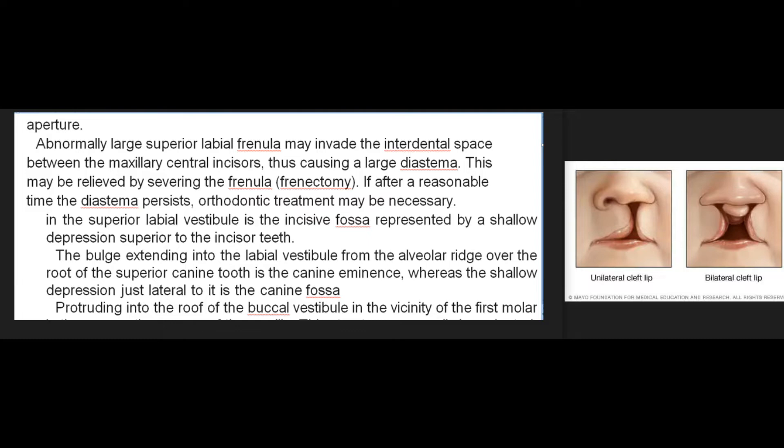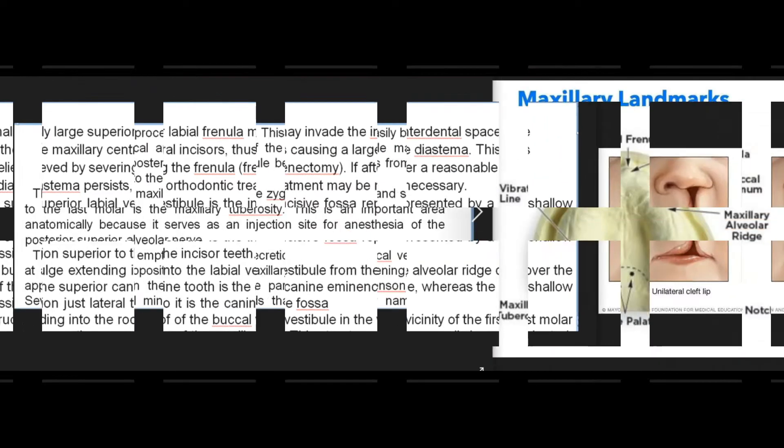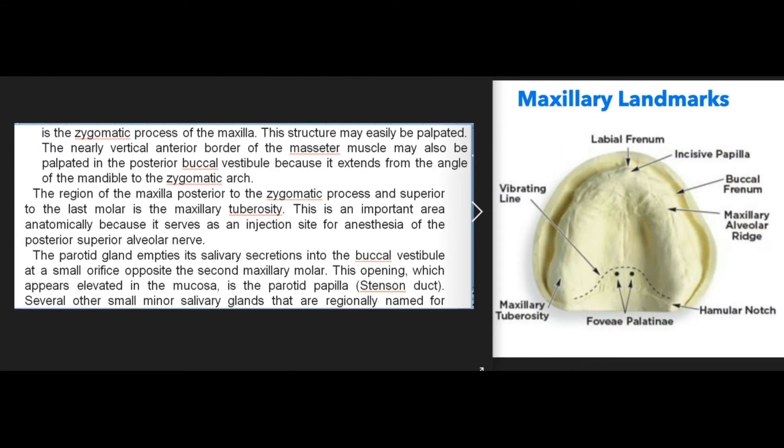The shallow depression just lateral to the canine eminence is the canine fossa. Protruding into the roof of the buccal vestibule in the vicinity of the first molar is the zygomatic process of the maxilla. This structure may easily be palpated. The nearly vertical anterior border of the masseter muscle may also be palpated in the posterior buccal vestibule, as it extends from the angle of the mandible to the zygomatic arch.